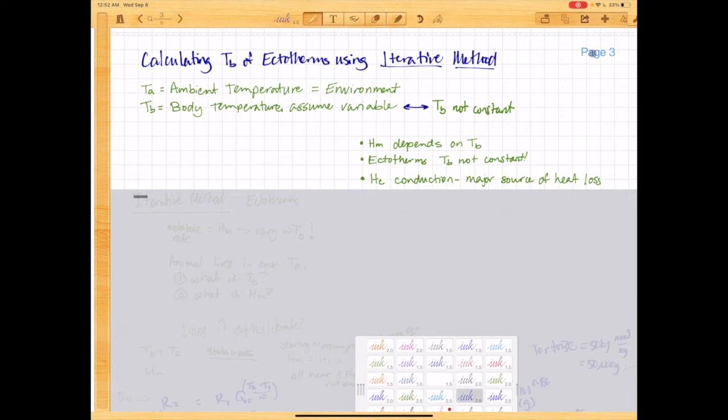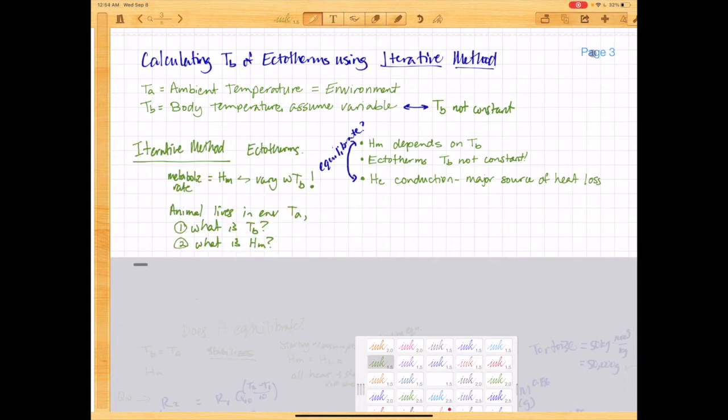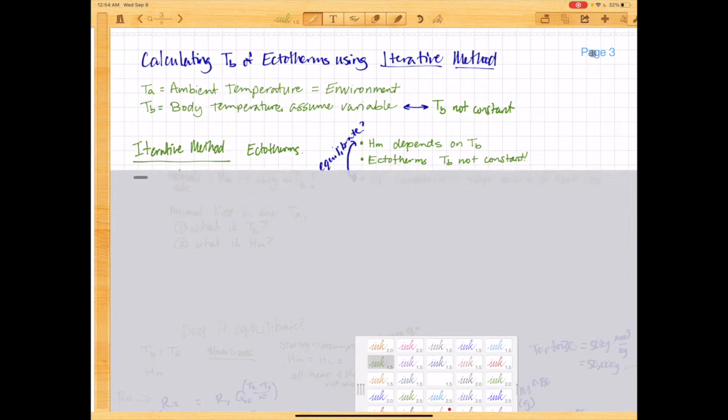So the question is, do these things equilibrate? Do they balance? And when it does, can we figure out what is the body temperature? So in order to figure that out, we can use what's called the iterative method.